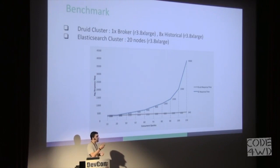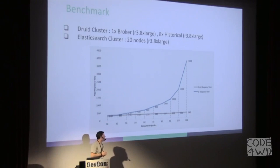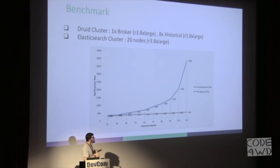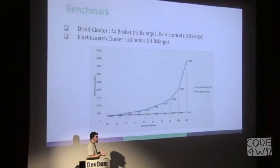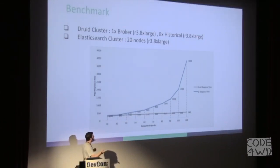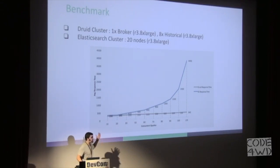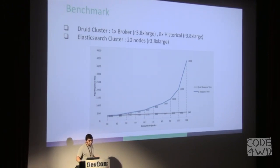With Druid, no matter how many concurrent queries we sent, we managed to maintain the same level of response time. One additional benefit is that we can add more nodes to the cluster if we need to support even more concurrent queries. Today in production we actually have 10 historical nodes and three brokers, so we can serve an even larger number of concurrent queries.